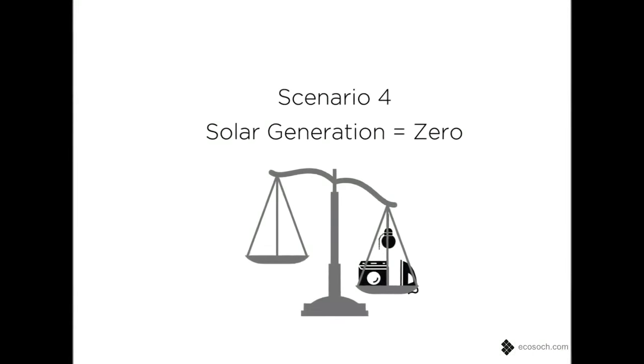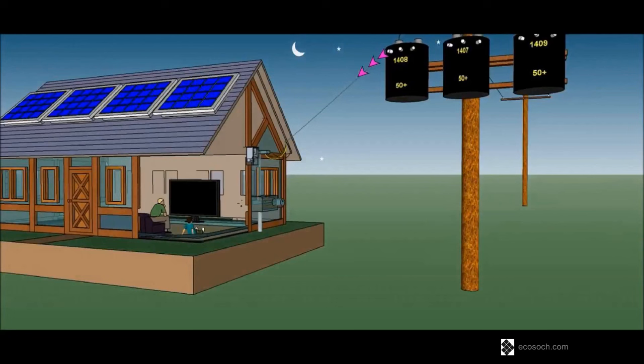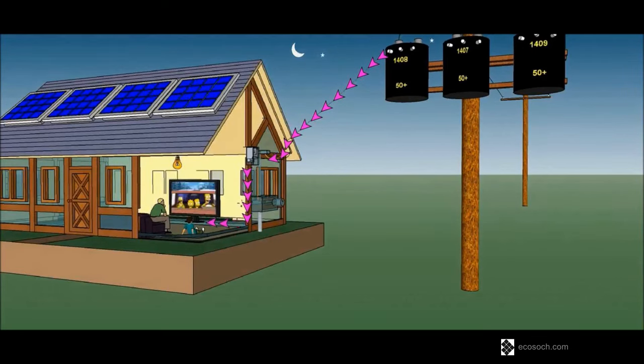Typically during night time, when there is no solar generation, the grid will supply power to meet the load requirements. This is called import from the grid.